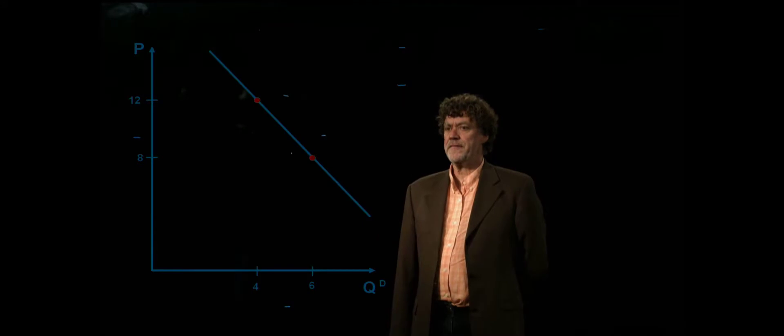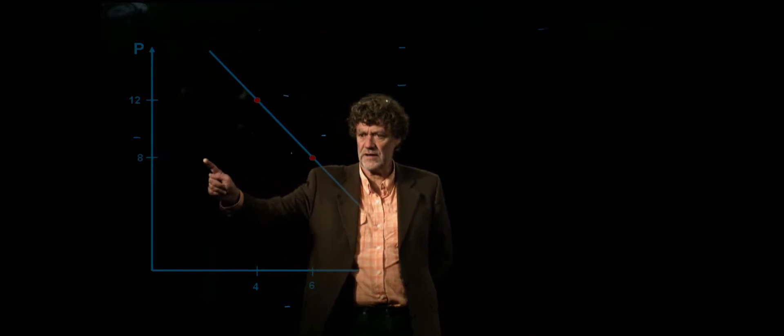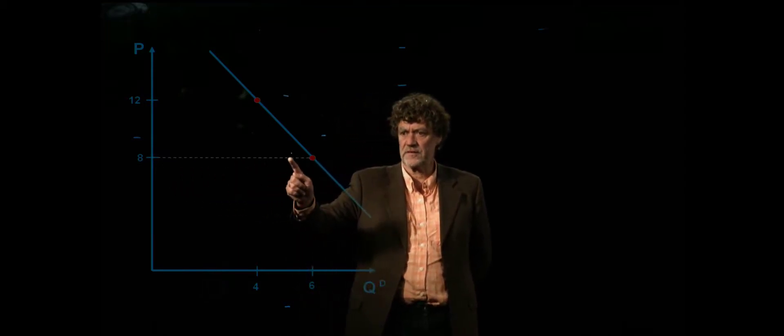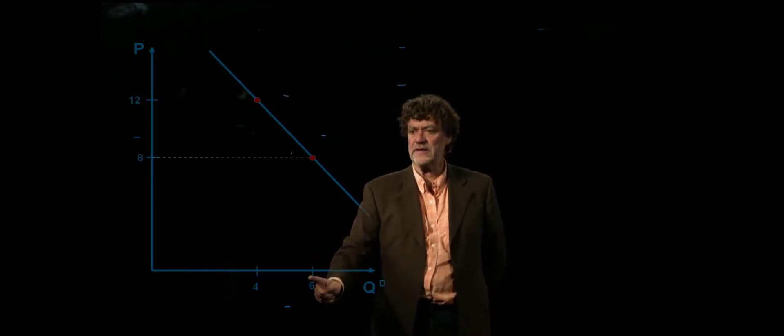Here we have a demand curve. If the price is 8 and we go straight to the curve and then go straight down, we can see the quantity demanded is 6.